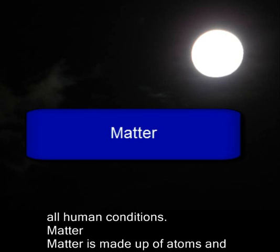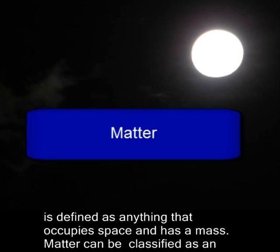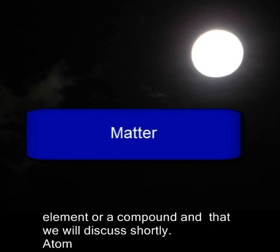Matter. Matter is made up of atoms and is defined as anything that occupies space and has a mass. Matter can be classified as an element or a compound, and that we will discuss shortly.